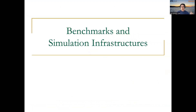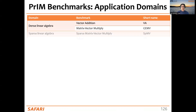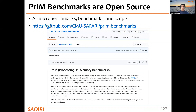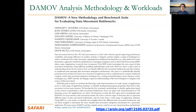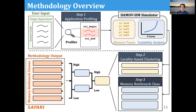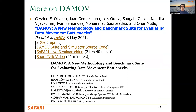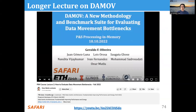Benchmarks and simulation infrastructures are necessary to enable future research. We covered the PrIM benchmarks, implemented for the UPMEM PIM architecture and publicly available. We also discussed the DAMOOF methodology for identifying workload suitability, along with a benchmark suite and simulator for evaluating data movement bottlenecks. DAMOOF involves three steps: application profiling, clustering by locality characteristics, and fine-grained memory bottleneck classification — identifying six different classes.